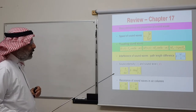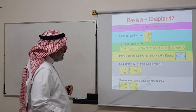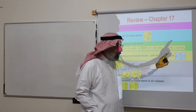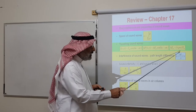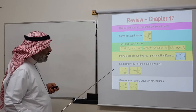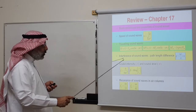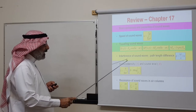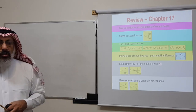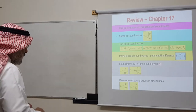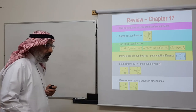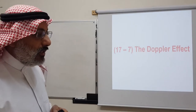We then considered the interference of sound waves, where the key quantity is the path length difference between two waves arriving at a given point, related to the phase difference by a specific equation. In the last lecture we dealt with the energetics of sound waves, finding intensity and sound level, and finally considered resonance in tubes open at both ends and tubes open at one end and closed at the other. Today we move to the last section: the Doppler effect.